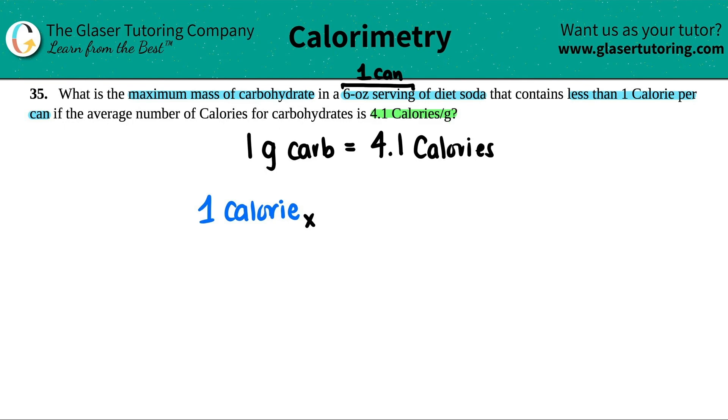We're going to be using this conversion factor to go from calorie to grams. So, calorie on the bottom, get rid of that unit, gram up on top, and because it's a carbohydrate, there's always one gram of carbs that's going to be metabolized, and that will produce out 4.1 calories. Cancel out the calories.